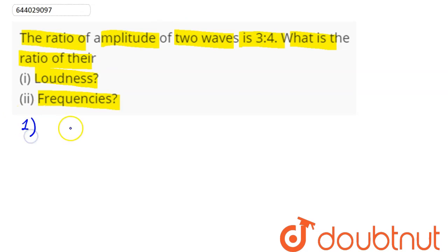first part, that is loudness. We have loudness proportional to square of the amplitude. That is L1 by L2 is equal to A1 square by A2 square. Now ratio of amplitude is 3:4, so this becomes three square by four square, which is nine by sixteen.